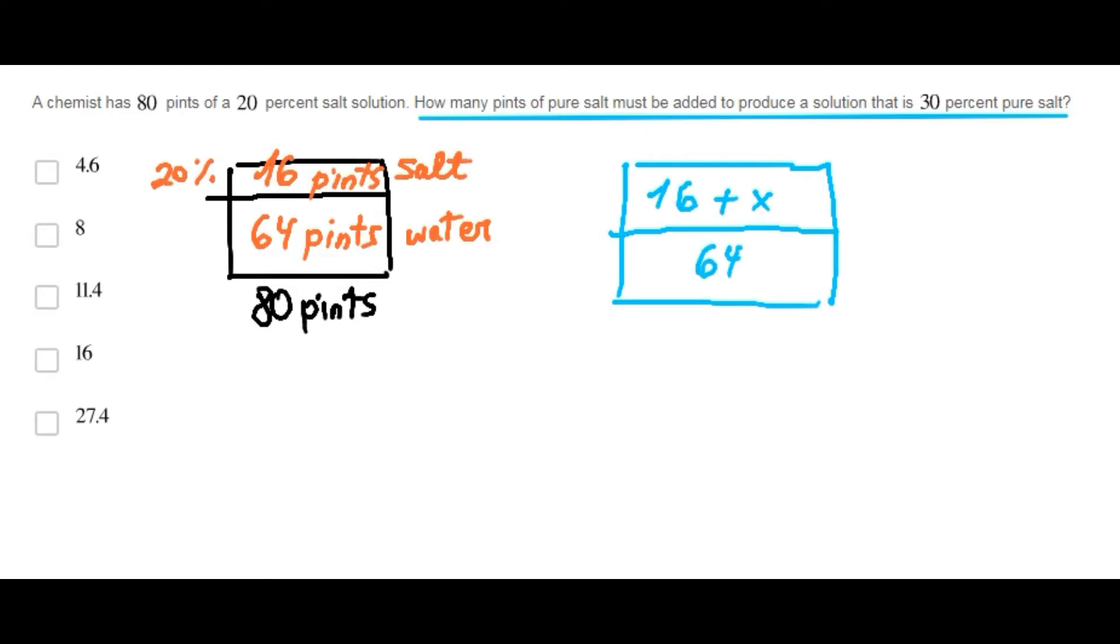So that we get a new solution that is 30% pure salt and therefore contains only 70% water. The new solution has a total of 80 plus x pints.